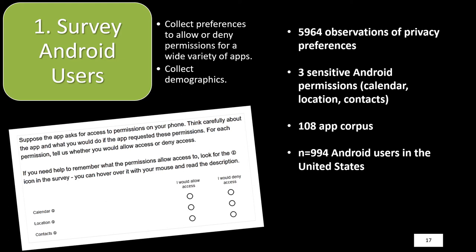In the first step, we surveyed Android users using questions as can be seen in the lower left corner of the screen. In general, we collected 5,964 observations of users' privacy preferences according to three Android permissions. The first was calendar, moderating access to the user's calendar. The next was location, which includes both fine-grained and coarse-grained location services. The third sensitive Android permission was contacts, the contact list and details of all users stored on the device. We gathered these permissions for an app corpus of 108 apps across all Google Play Store categories, and collected 994 samples from Android users in the United States over the age of 18.